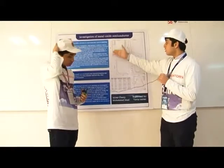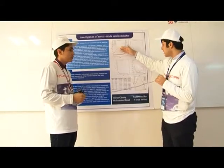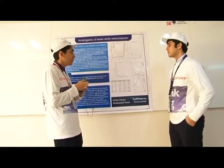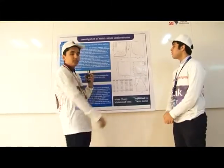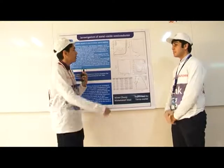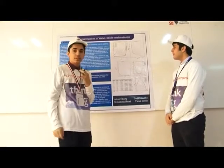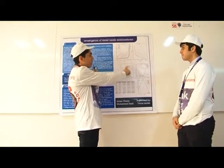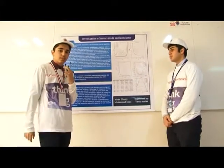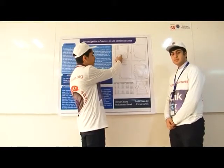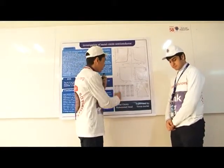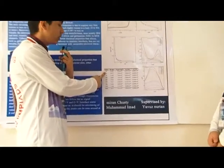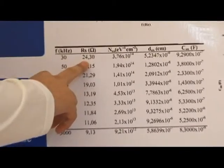I would like to tell you the names of the graphs, like resistance and capacitance. The first electrical property is resistance. The lowest frequency is 30 kilohertz. As you may see, it has the highest interface state effect, as you may see from the peaks. 30 kilohertz frequency corresponds to the highest resistance.